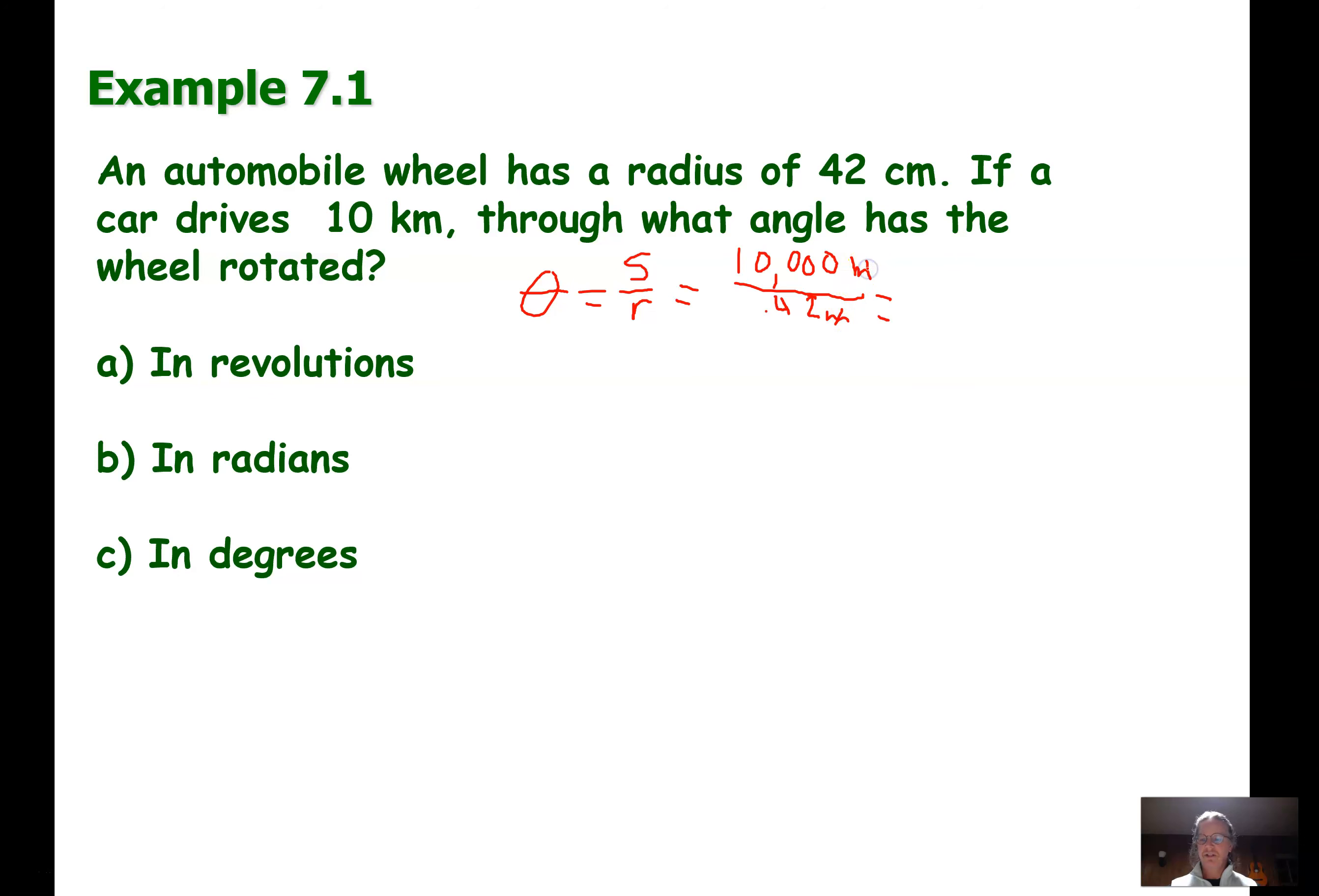Alright, let's do the little clickety clack. 10,000, one two three, divided by 0.42. Cause they're both in meters, you have to be in the same unit. So they cancel out and you end up with 23,800, goodness gracious. What units would that be in? Radians.